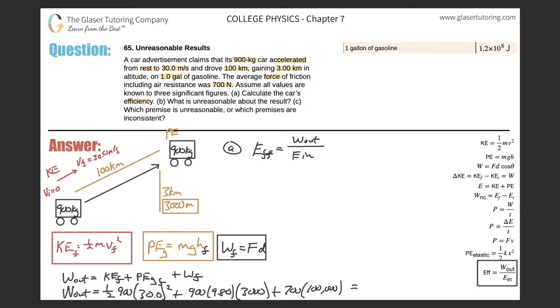All right, so we get a value here of about 9.69 times 10 raised to the 7. Times 10 raised to the 7, and that's in terms of joules.